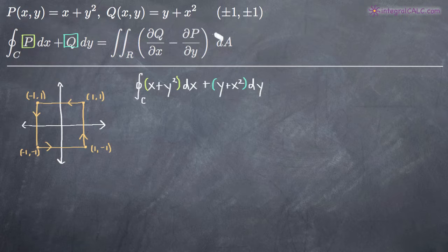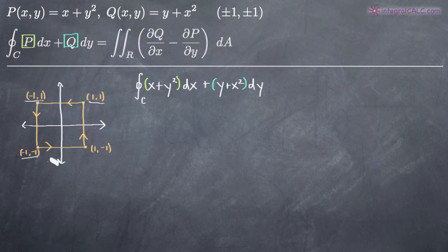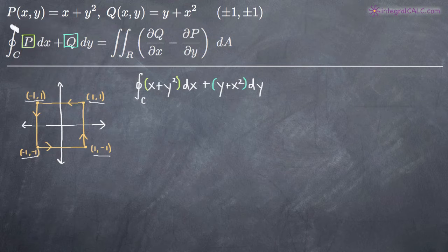We've been asked to find the line integral defined by the square that has vertices at positive/negative 1, positive/negative 1. So we have these four points: (1,1), (-1,1), (-1,-1), and (1,-1). So we have this line integral that's a square.